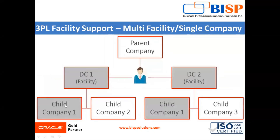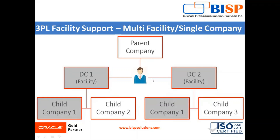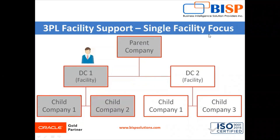So our user has access only to distribution center one and only child company one. The next case is multi-facility or single company. In this case the user has access at the DC level — that is the distribution center level — so the user will have access to both DC1 and DC2, but only to company one. Based on user setup we can control what they have access to.